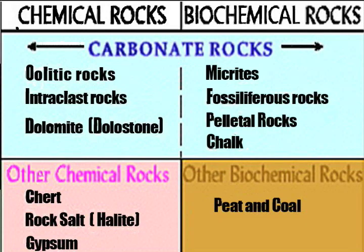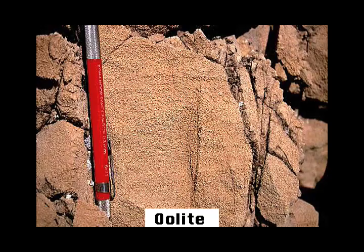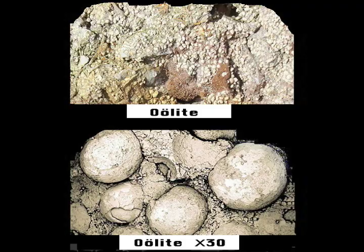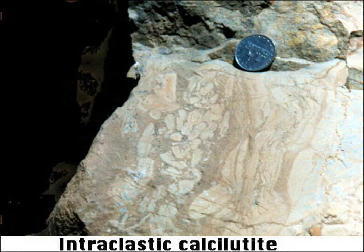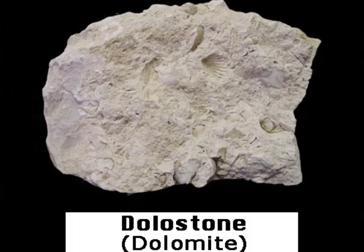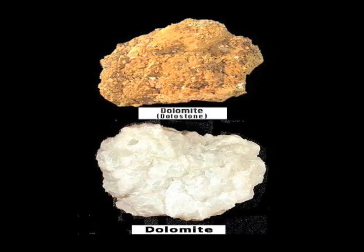This chart offers basic criteria for and an elementary classification of precipitates based on their chemistry and mode of origin. In blue, carbonate rocks formed directly by precipitation from water are classed as chemical. These are discriminated further by the form of their precipitates as either oolites or intraclasts, or by a change in their composition — added magnesium — which produces dolostone.